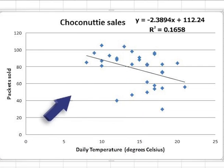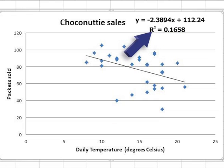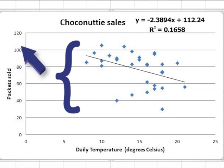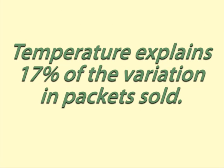The other value we found was the R squared, also known as the coefficient of determination. It tells us how much of the variation in the dependent variable — in this case sales — can be explained by the independent variable, in this case temperature. We can say that temperature explains 17% of the variation in packets sold.